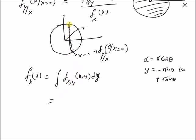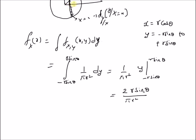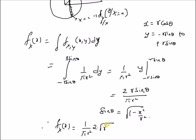We are normalizing the PDF across this strip. The integral is ∫ from −R sinθ to +R sinθ of (1/(π R²)) dy, which equals (1/(π R²)) · 2R sinθ. Since X = R cosθ, sinθ = √(1 − x²/R²), so the marginal PDF is f_X(x) = (1/(π R²)) · 2√(R² − x²).